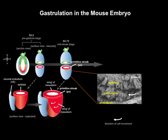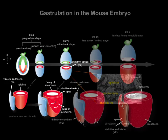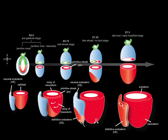As cells ingress, they undergo an epithelial to mesenchymal transition. Mesoderm emerges as two bilateral wings of cells that spread anteriorly in the space between two epithelia, the visceral endoderm on the outer surface of the embryo and the inner epiblast. The cellular movements underlying the morphogenesis of the definitive endoderm are a little more obscure. We know that definitive endoderm cells emerge in the vicinity of the anterior primitive streak.